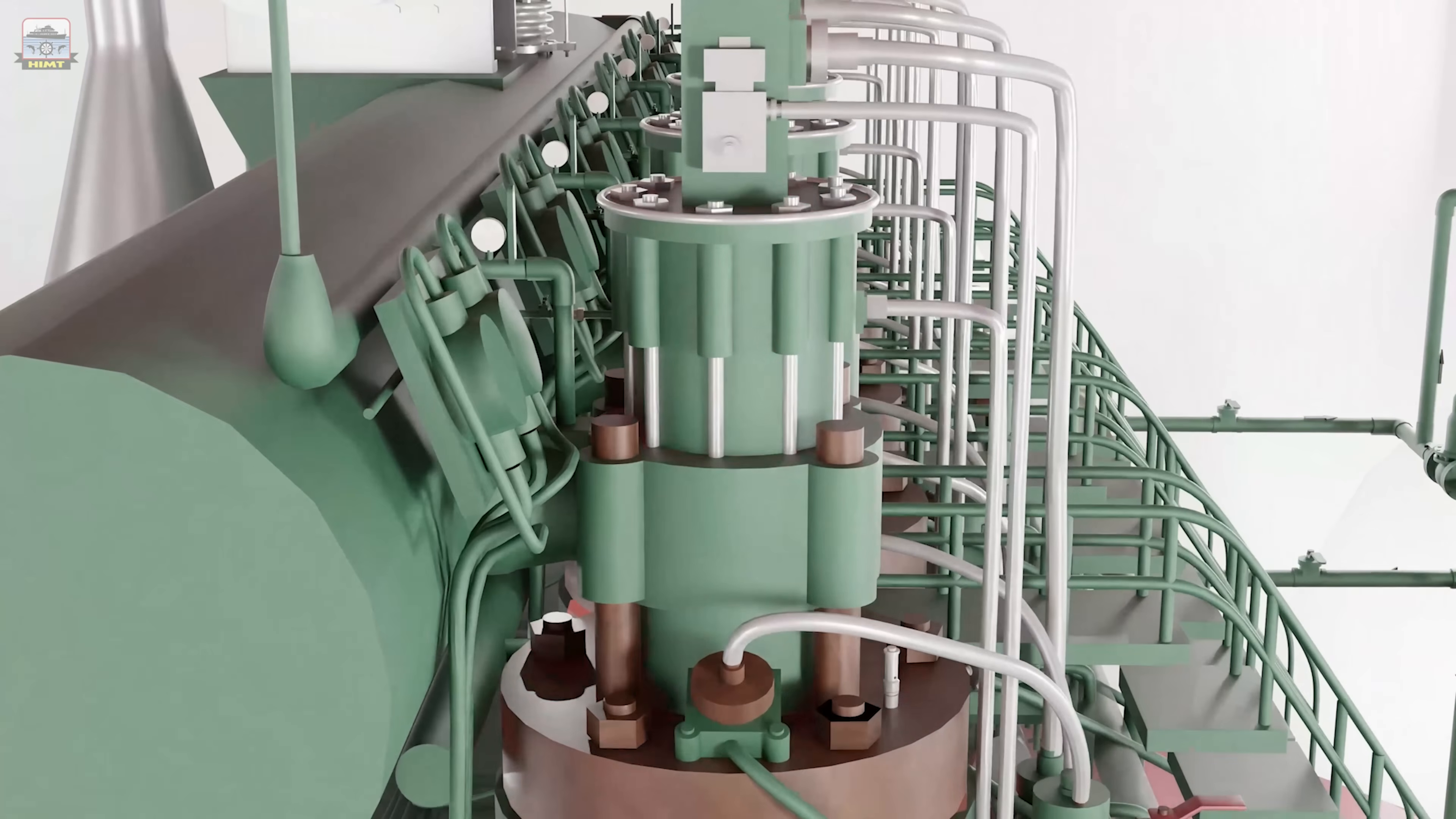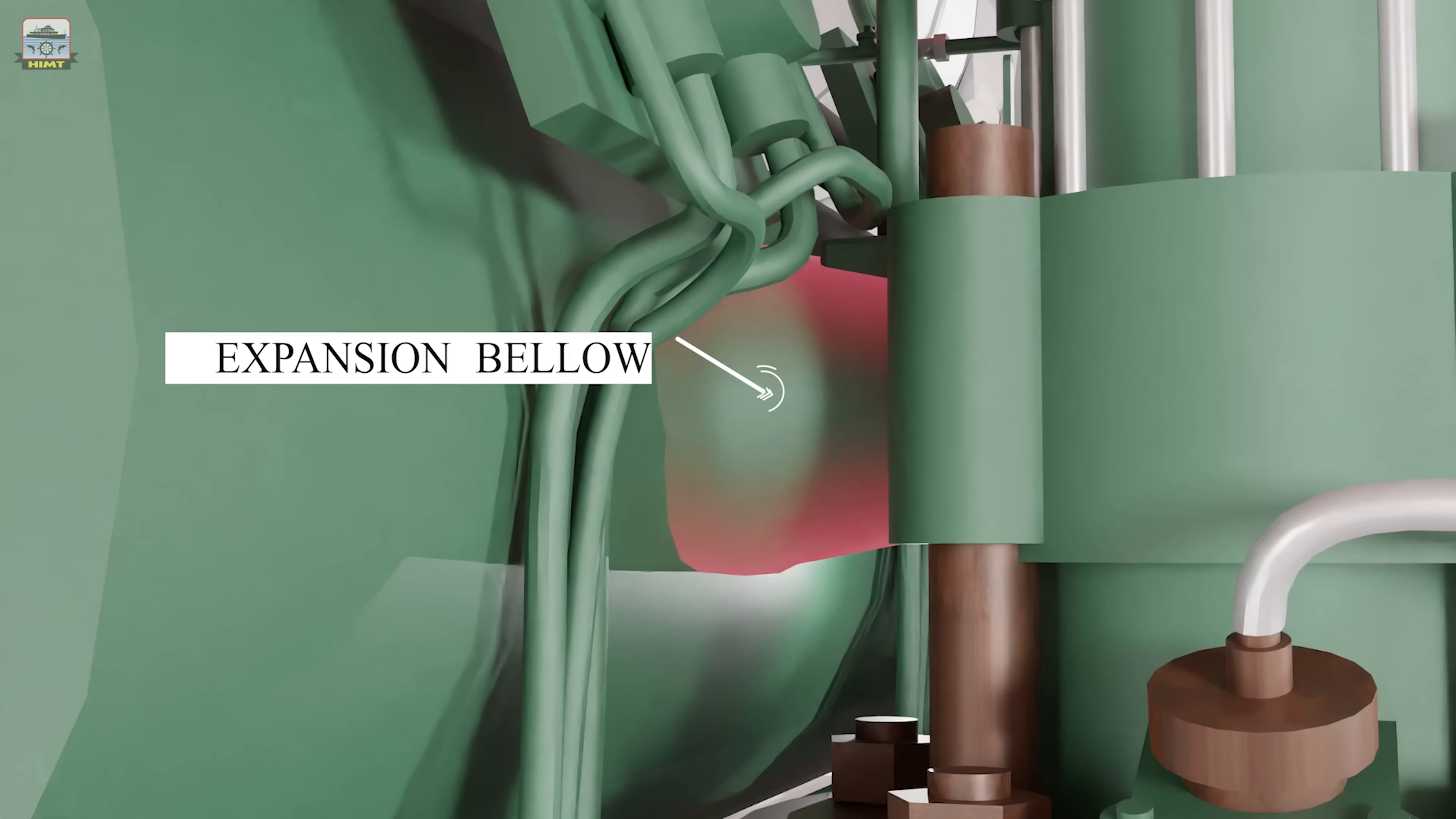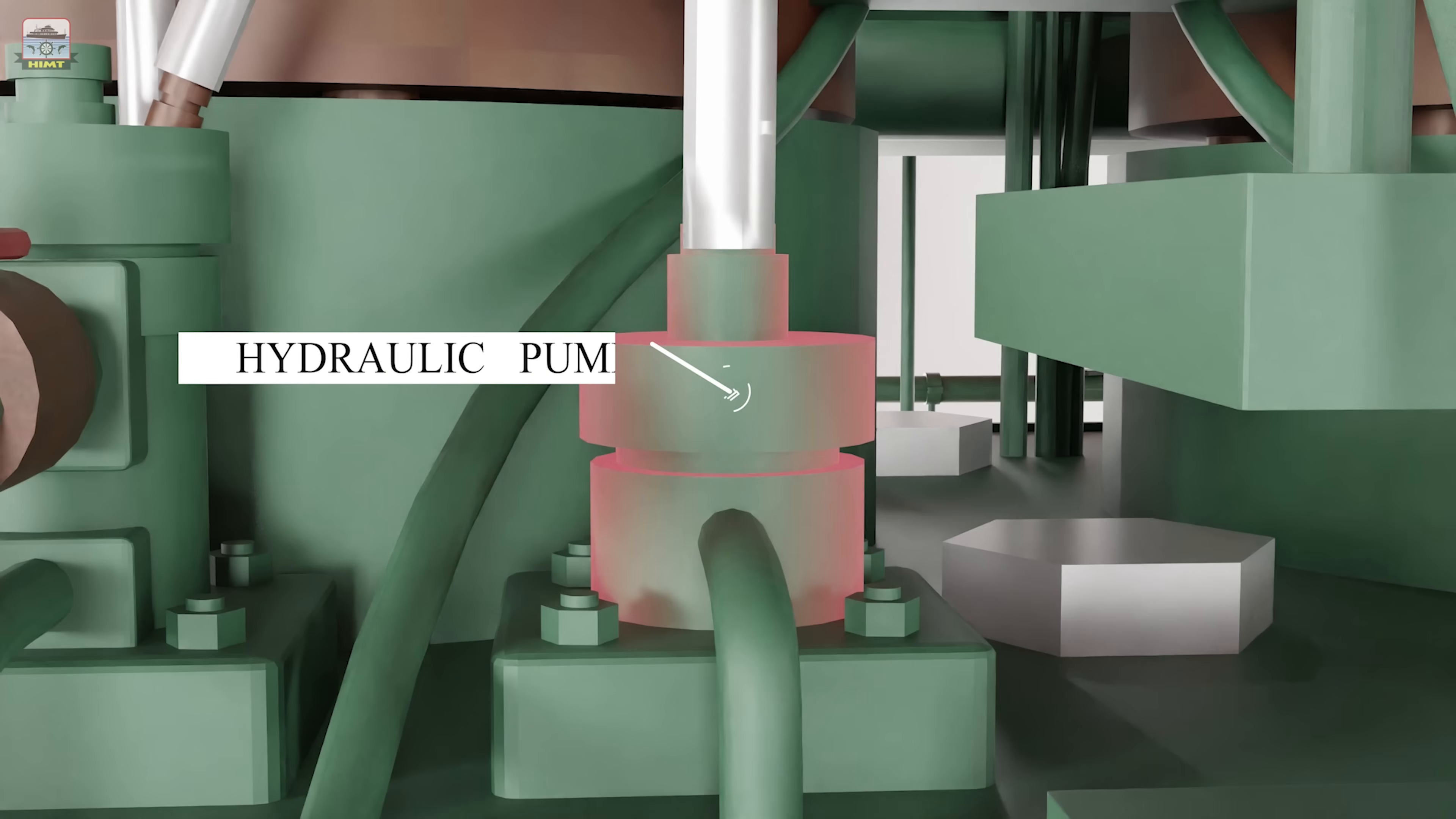The cylinder head accommodates exhaust valve at the center. The exhaust gas discharge from the exhaust valve enters the expansion bellow and reaches the exhaust manifold. The exhaust valve is opened by the hydraulic oil pressure developed by the hydraulic pump driven by the camshaft. The valve is closed by air spring.